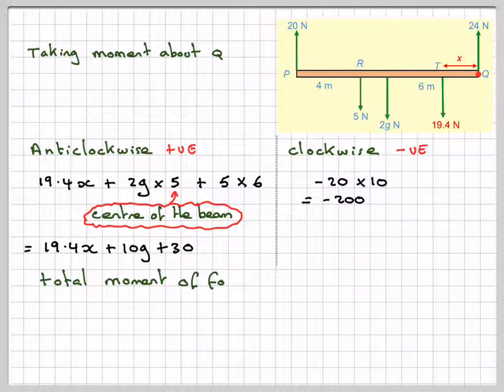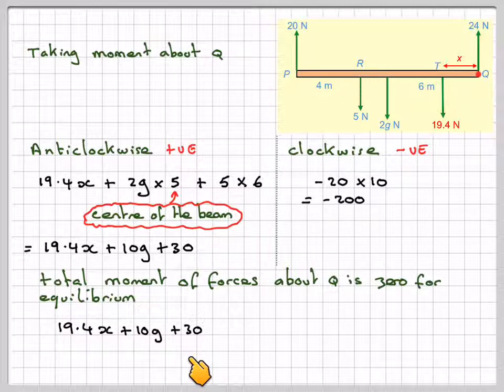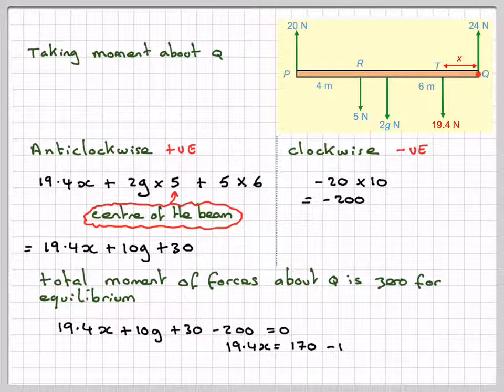The total moment of forces about Q is 0 for equilibrium, so we're going to have 19.4X plus 10G plus 30 for the anticlockwise, and then we take away 200, that's equal to 0.